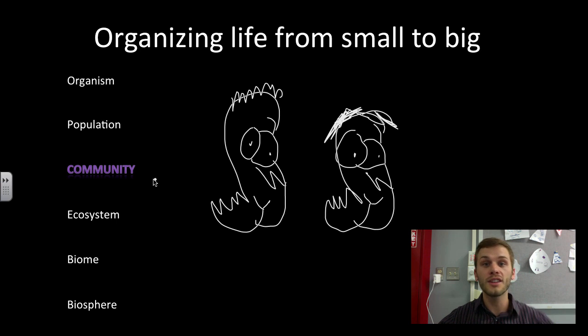As we go to the community, the only difference is that there's going to be several different populations living in a defined area. So we're going to have these ducks, but we also might have some birds. We might also have a beautiful turtle. Here's its shell, here's its head, and here's its feet. So a community, all of a sudden, you have these different populations interacting, and they might be competing for food. They actually might be eating each other.